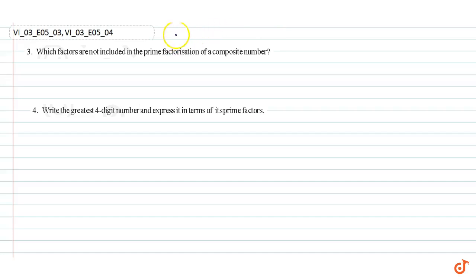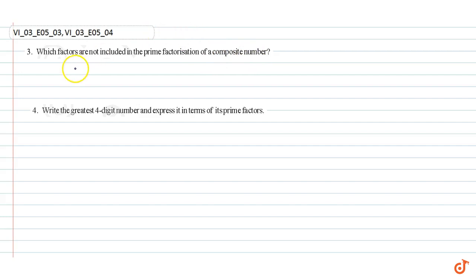In this video we are going to answer question number three and four. Question number three: which factors are not included in the prime factorization of a composite number? The answer is 1 and the number itself.